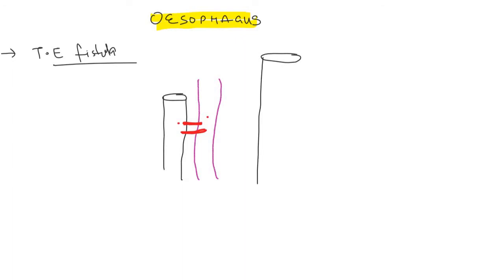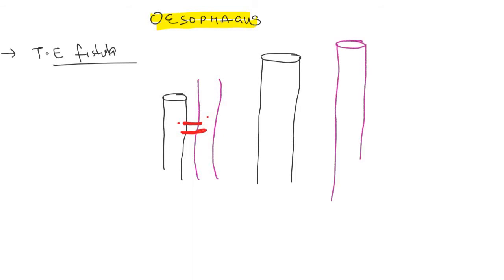There are various types of tracheoesophageal fistula. For example, there can be a simple connection between the trachea and esophagus shaped like the letter H — this is called the H-type tracheoesophageal fistula.